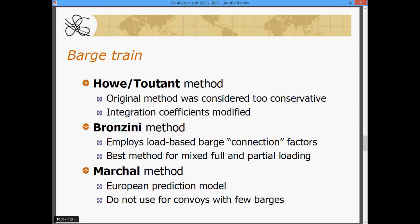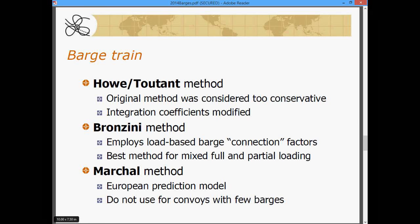Now, there are three different methods here. The earliest barge train resistance prediction method was the Howe method. That was considered far too conservative by later authors and researchers. One, a gentleman named Toutant in the early 1980s created a variant of that. His was considered a little less conservative, and so the integration coefficients have been modified to suit the best contemporary thinking.